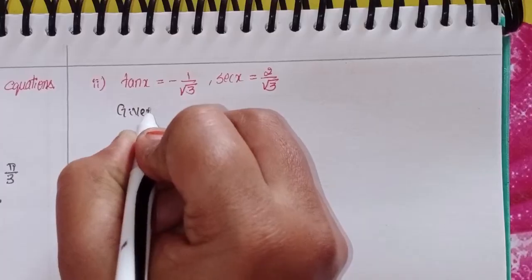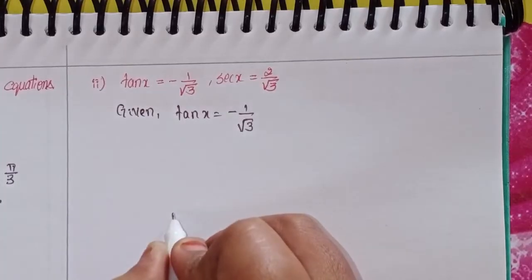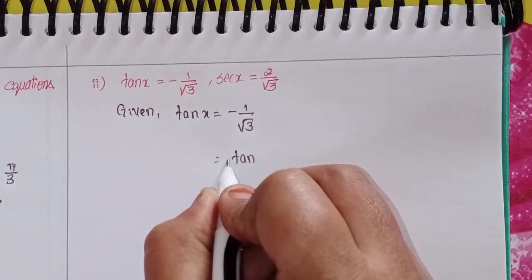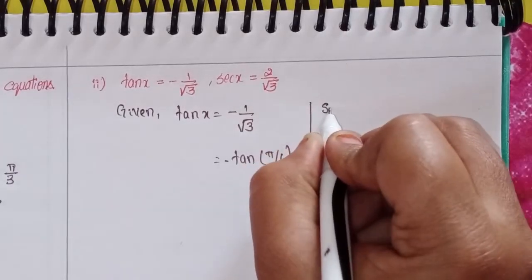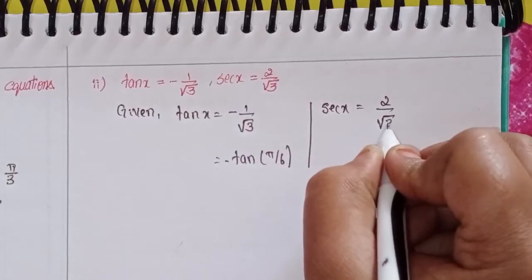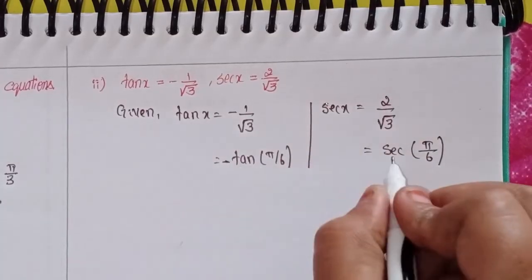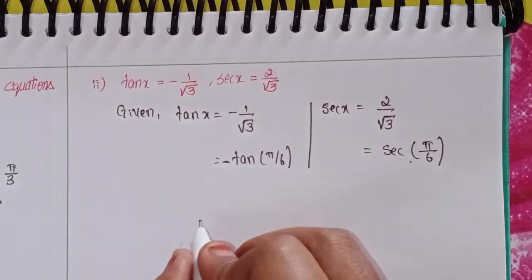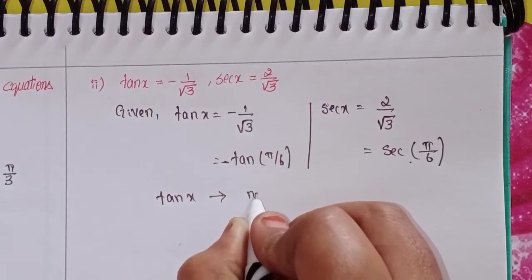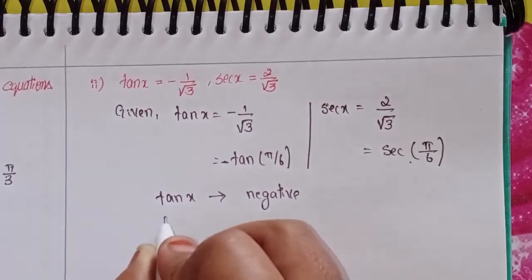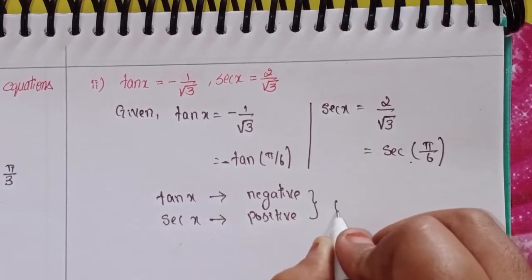Next, second problem. Given: tan x = -1/√3, that means minus tan(π/6). And sec x = 2/√3, that means sec(π/6). This value is negative and this is positive.